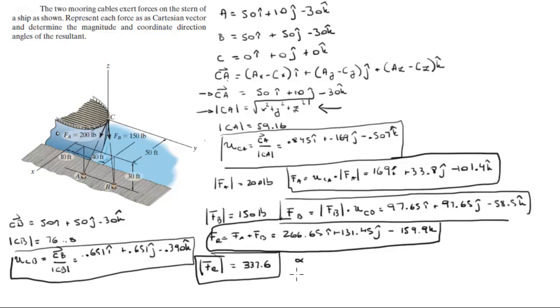And the direction angles are found by doing the cosine inverse of the x over the magnitude, cosine inverse of the y over the magnitude, and cosine inverse of the z over the magnitude, which are 37.83 degrees, 67.1 degrees, 118.3 degrees for the resultant force.